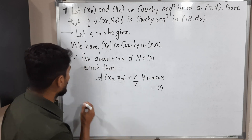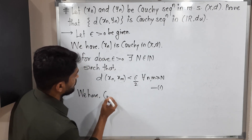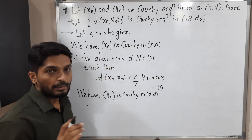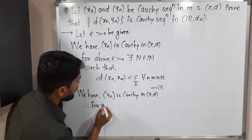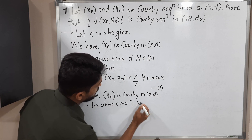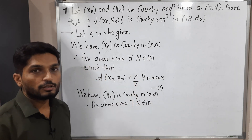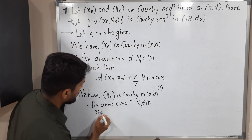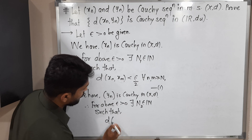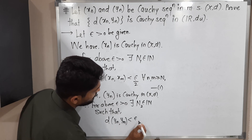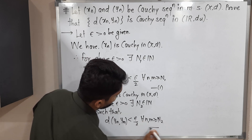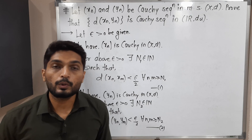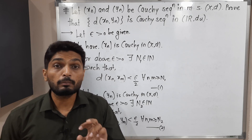Now using the second piece of information: yn is also Cauchy in (X, d). Therefore, for the same epsilon > 0, there exists a natural number N2 such that d(yn, ym) < ε/2 for all n, m ≥ N2. Call this inequality (2). Now inequality (1) holds for N1 and inequality (2) holds for N2.